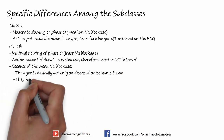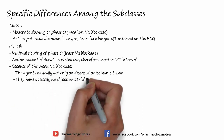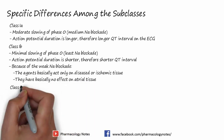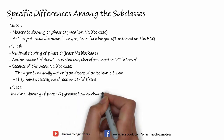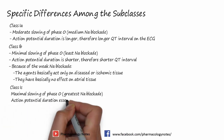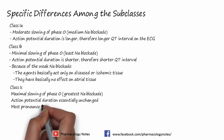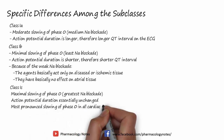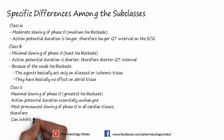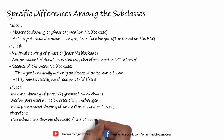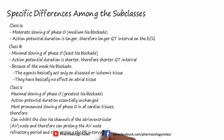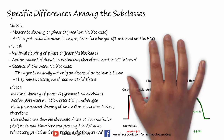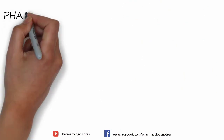Class 1C causes maximum slowing of phase 0 — that is, greater sodium blockade — while action potential duration is essentially unchanged. It causes the most pronounced slowing of phase 0 in all cardiac tissue, and therefore can inhibit the slow sodium channel of the atrioventricular (AV) node, prolong the AV node refractory period, and thus prolong the PR interval. In the diagrammatic representation, red is 1A, blue is 1B, and green is 1C — you can see the changes in the action potential.